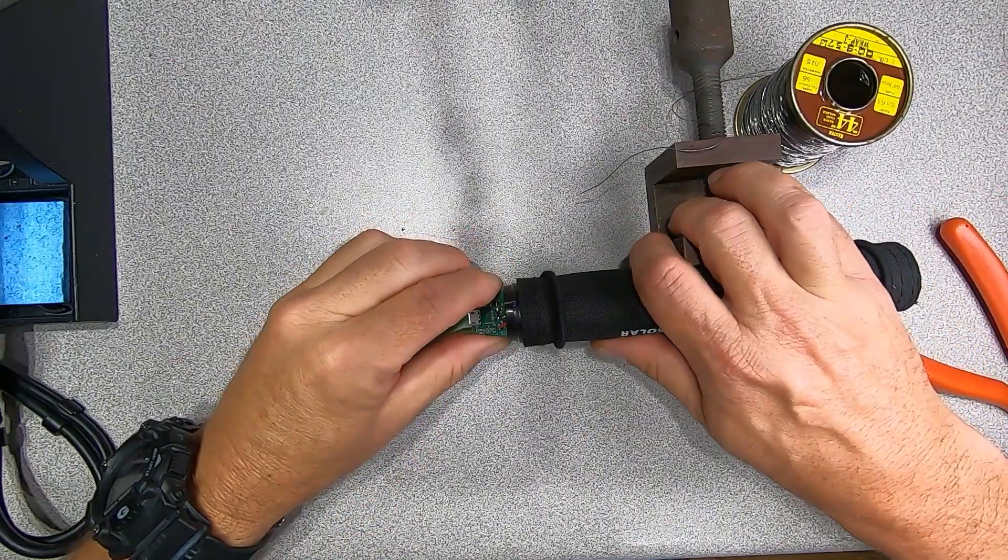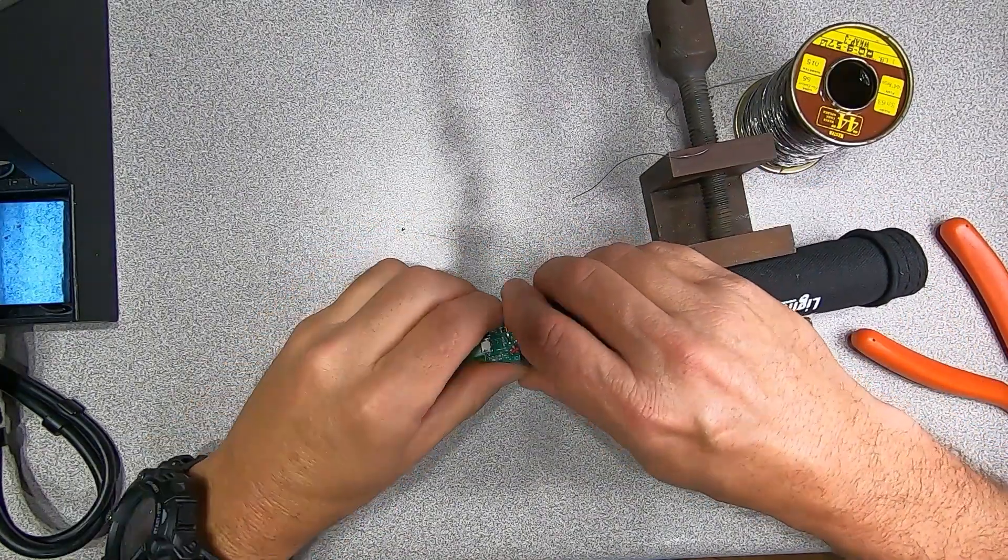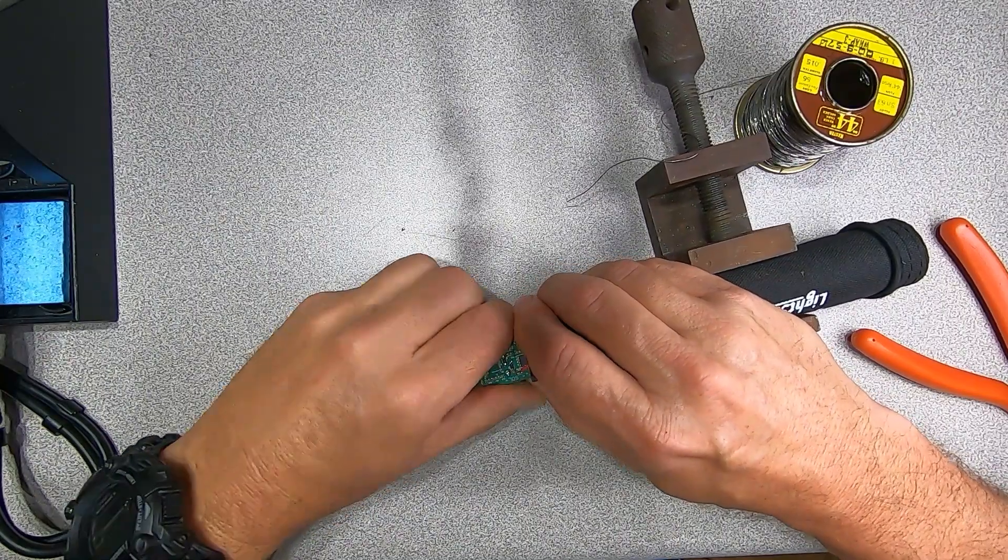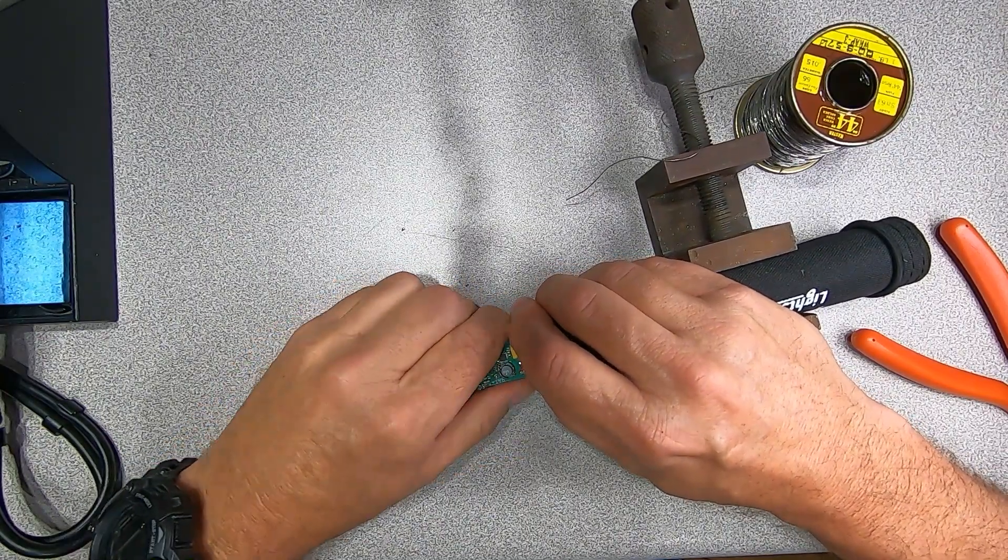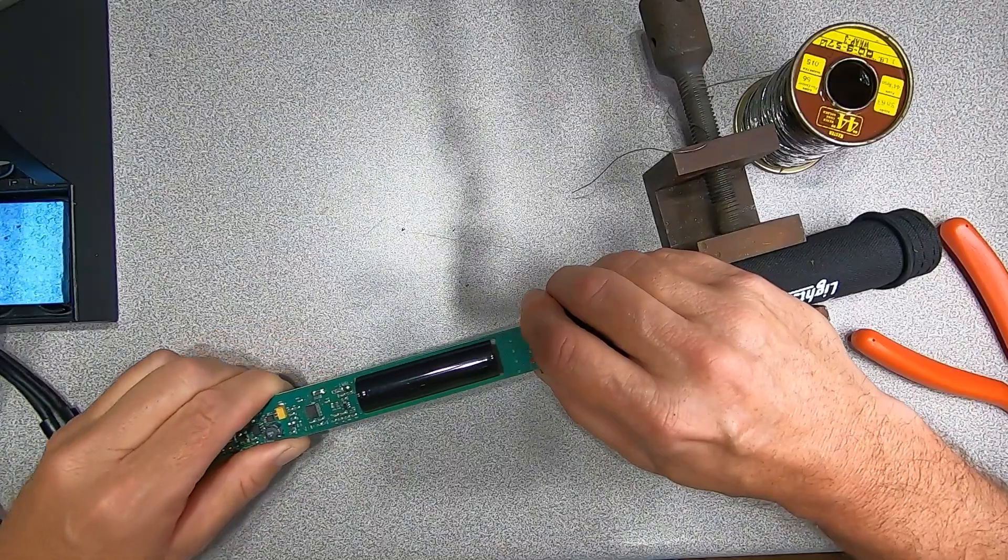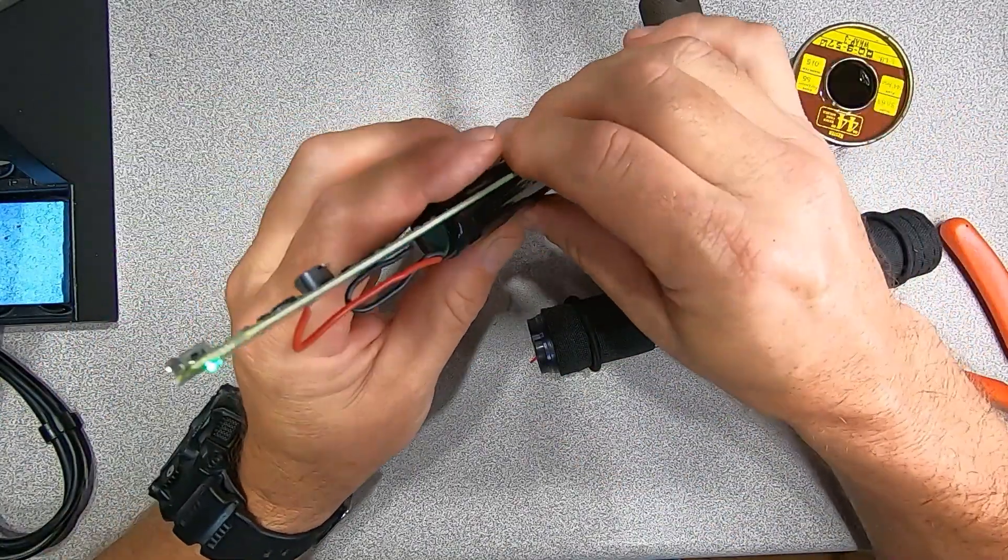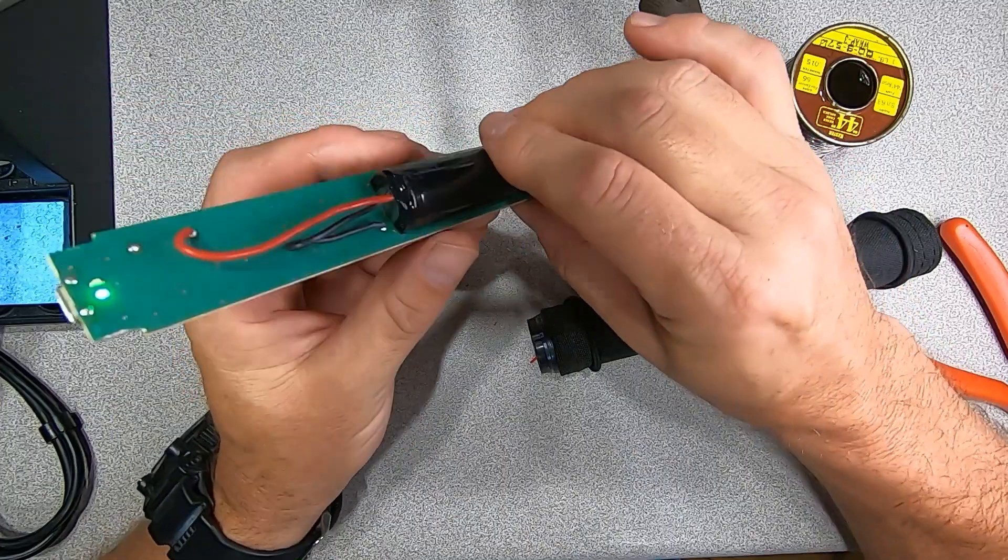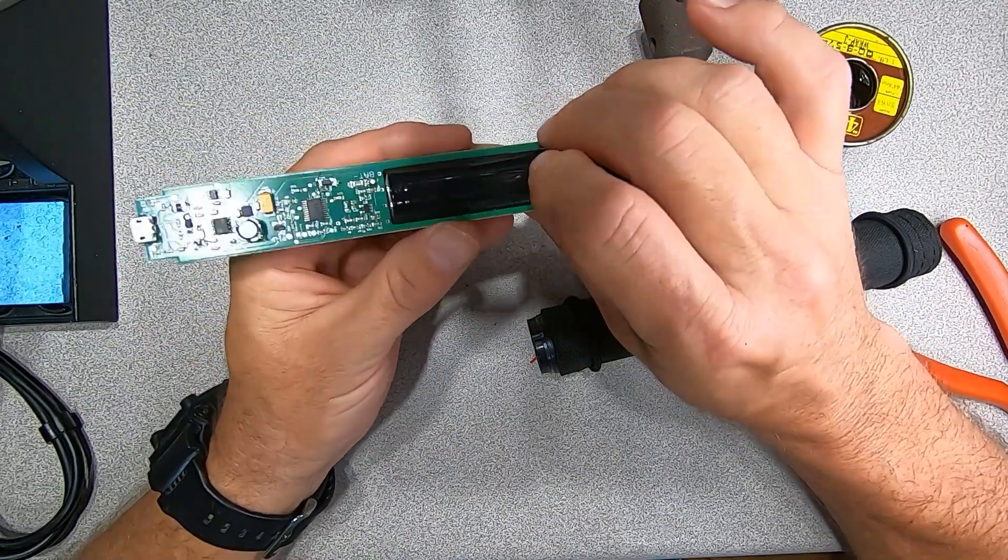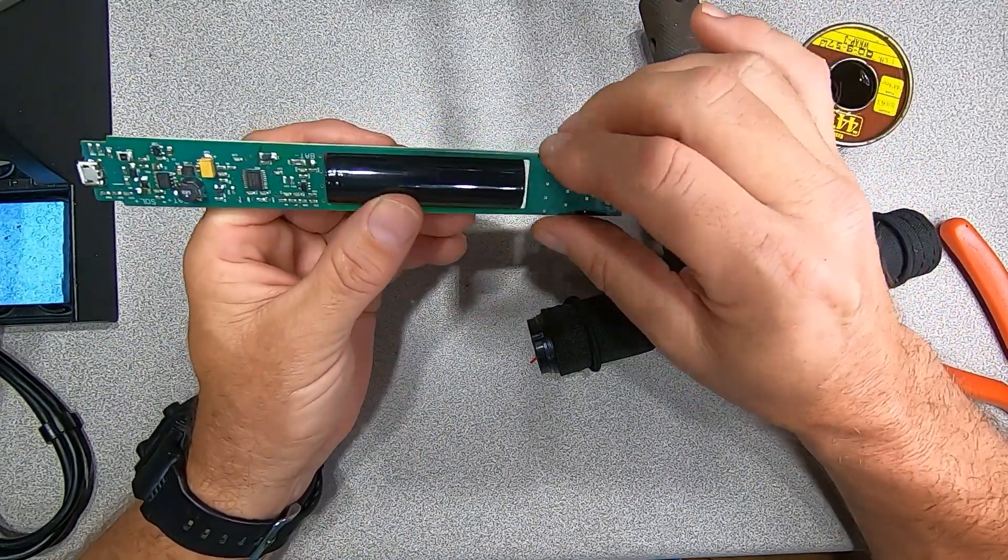Let's go ahead and pull our board out. Should be able to remove it entirely now. And here we have it. And you can see that we have our 18650 right here, soldered in. So we'll just need to get a new cell.